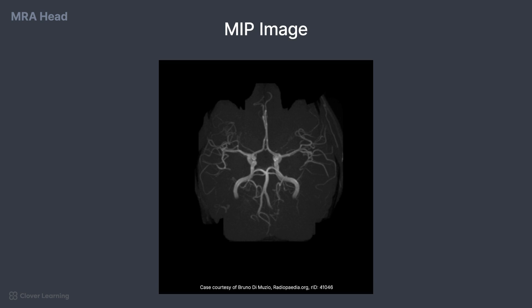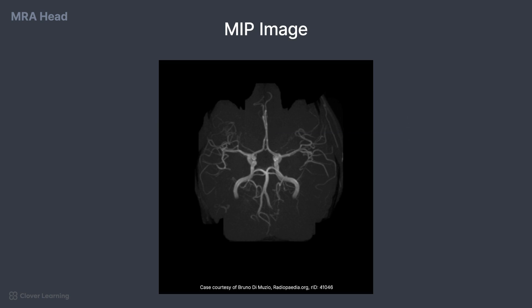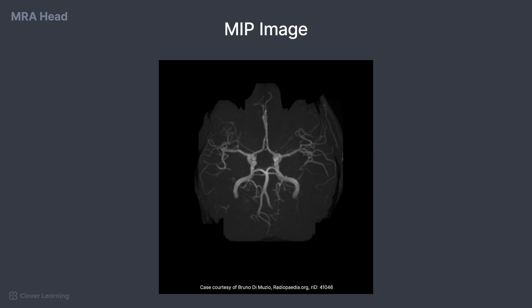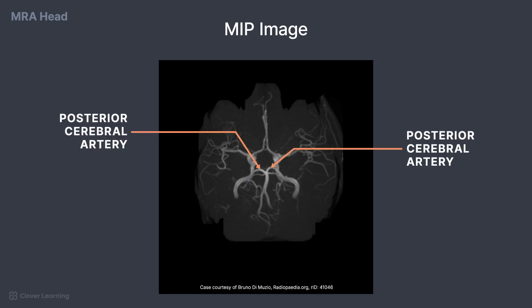On an MRA of the head, one important structure is the anterior cerebral artery. This is easy to identify as it is always in the front or anterior. The internal carotid artery and middle cerebral arteries look a bit like a tree. The internal carotid artery is the trunk of the tree, and the middle cerebral arteries are the branches. One way to look at the posterior circulation of the MRA is like a stick figure with no head. The arms of the stick figure are the right and left posterior cerebral arteries, and the body of the figure is the basilar artery.